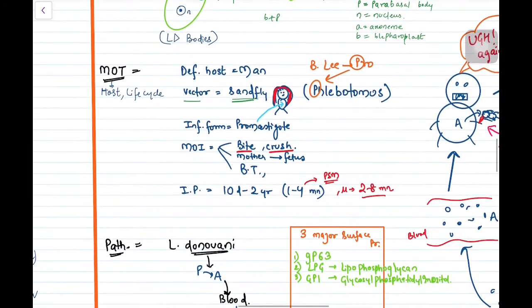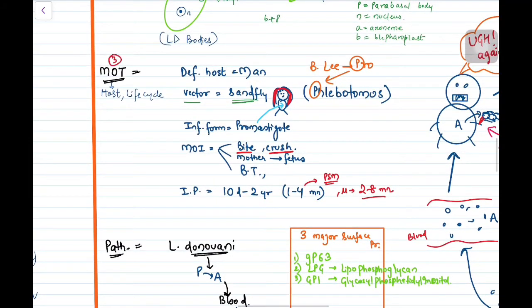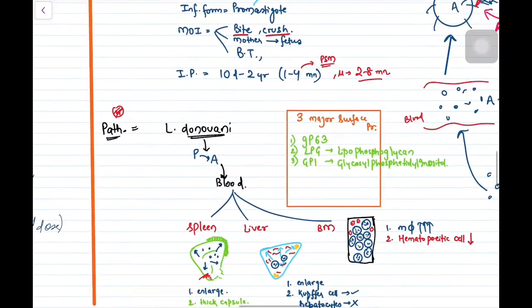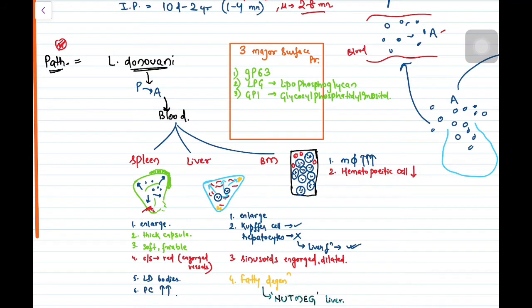So our third part, MOT, is over. Now pathogenesis. From blood it will go into various reticuloendothelial system like spleen, liver, bone marrow. What are the implications in each of these organs? The most severely affected is obviously spleen. We already discussed these three major surface proteins: L, G, and G.